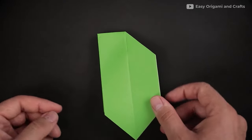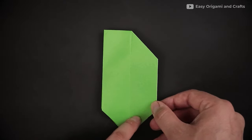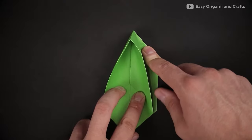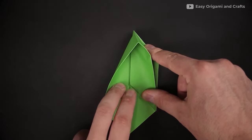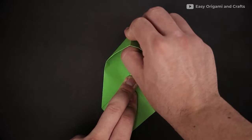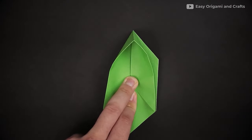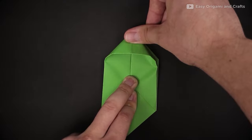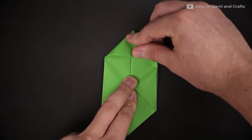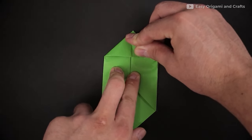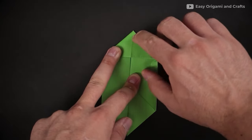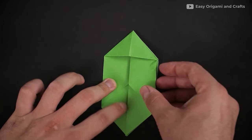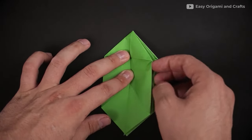And now, we'll repeat the same thing on the left. First, we'll open it up. Then we'll flatten the paper, making a triangle on top. And close to the left.